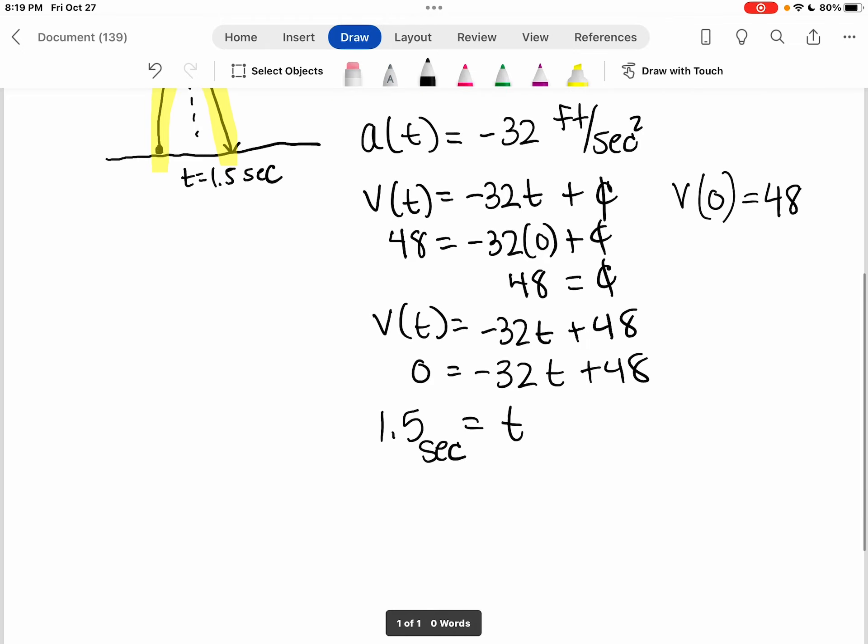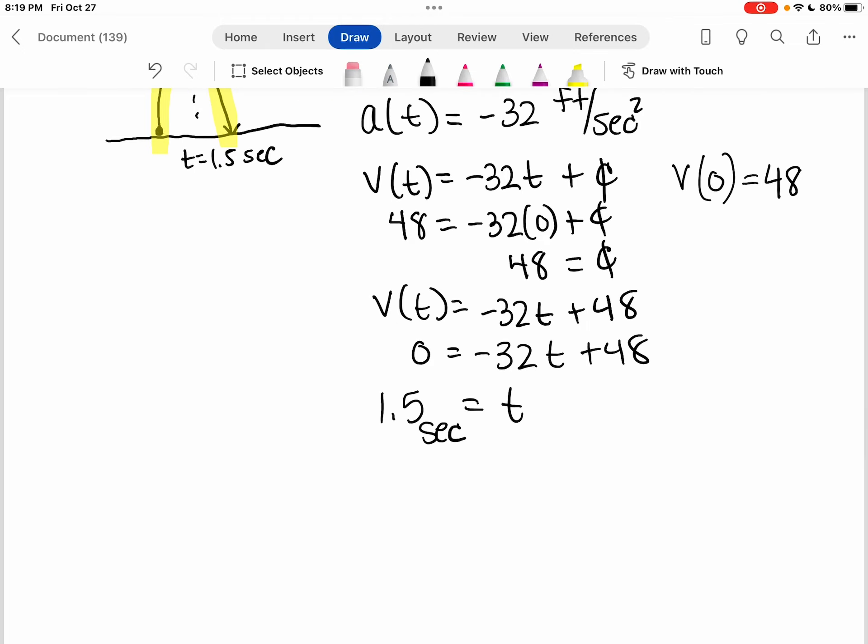So in order to do that, we actually need a height function. So we're going to work backwards one more time from the velocity, use the antiderivative.